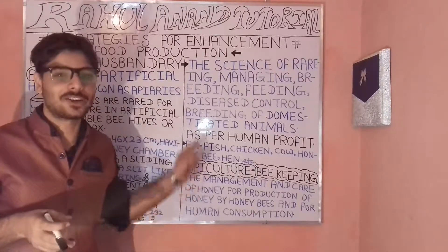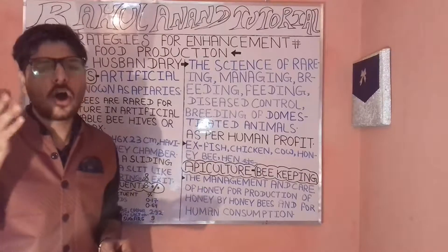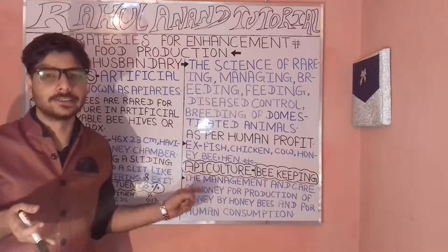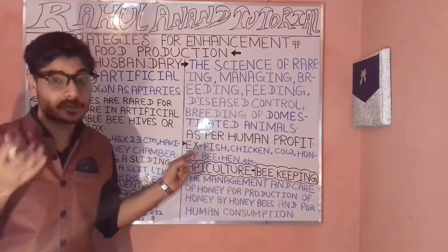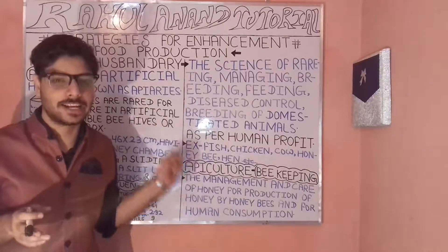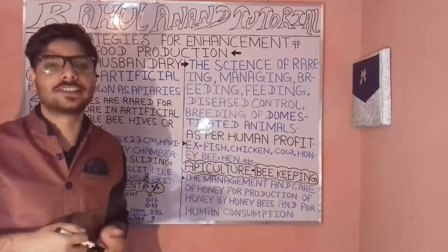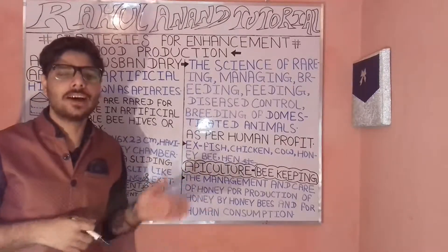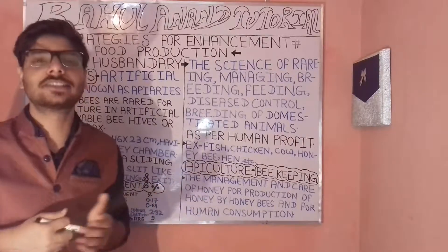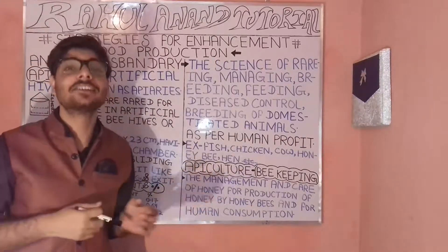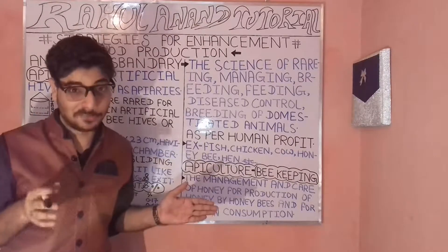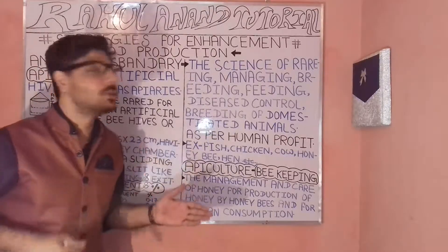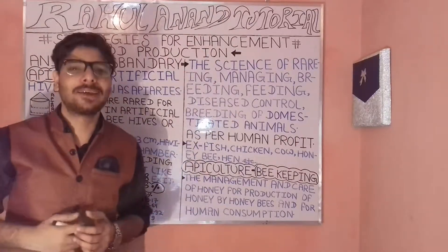This covers apiculture and honeybees, as well as animal husbandry, which belong to the chapter on food production and enhancement. If you like the lectures and videos, please subscribe, like, and comment below to let me know what concept you want to learn. Thank you for watching Davranandh Tutorials.